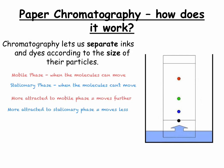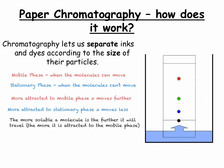The solubility of the molecule in the solvent will also make a difference — the higher the solubility, the further they will travel in the mobile phase. This allows us to identify a pure substance from a mixture, as a pure substance will only produce one spot on the paper chromatography paper, whereas a mixture will produce multiple spots. However, a mixture may produce a different number of spots depending on the solvent, as this will change the solubility of different components that make up the sample.